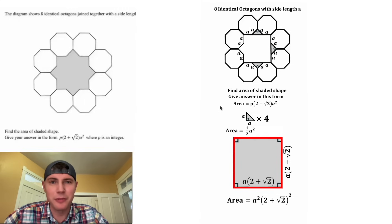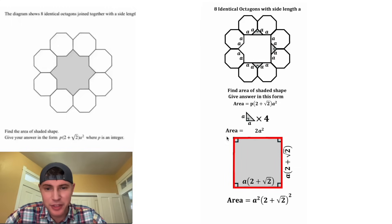And then we're going to multiply that by 4. Let's rearrange stuff, and 4 times 1 half is equal to 2. So the area of these four triangles is equal to 2A squared.